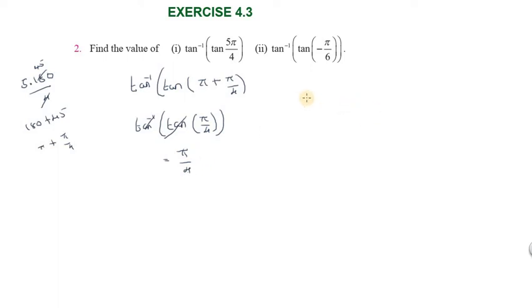Second part: tan inverse of tan minus π/6. Here we can write tan inverse of minus tan π/6. Tan π/6 is tan 30 degrees. Tan 30 equals 1 over root 3. Then tan inverse of minus 1 over root 3.